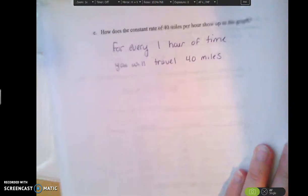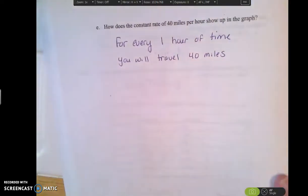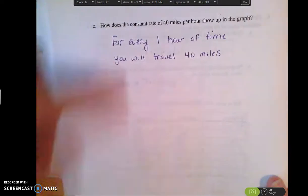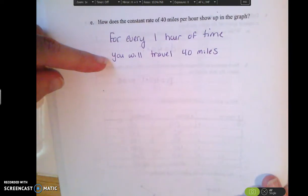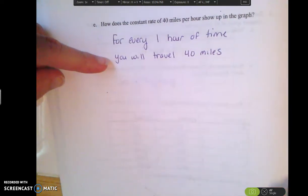So one more time they're asking you. So how does that constant 40 miles per hour show up in the graph? And again, it's saying that for every one hour time that you travel, you will travel a total of 40 miles. So I hope this helps.